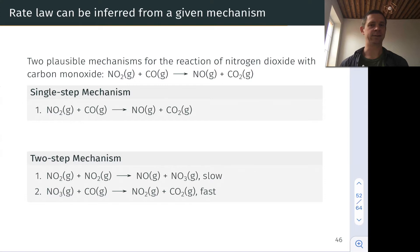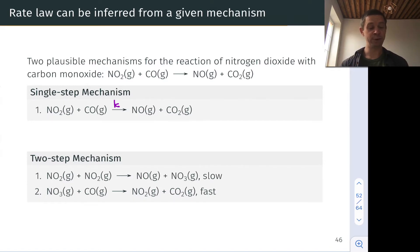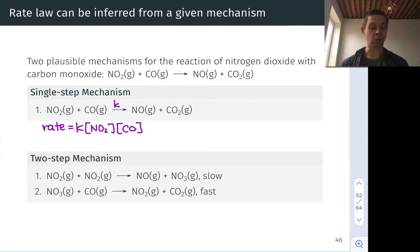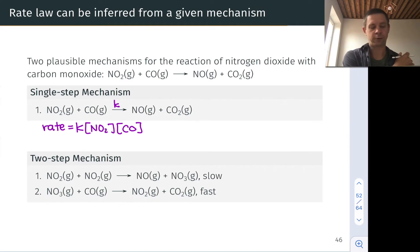For the single-step mechanism, we can notice that if we call the rate constant for this step K, the step is unimolecular in NO2 and unimolecular in CO. So the rate law we would observe is: rate = K × [NO2]¹ × [CO]¹.